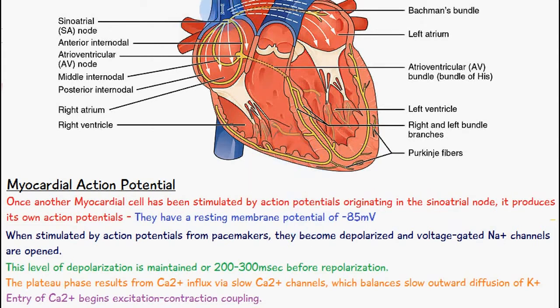The sinoatrial node is located here. The myocardial cells have a resting membrane potential of minus 85 millivolts.